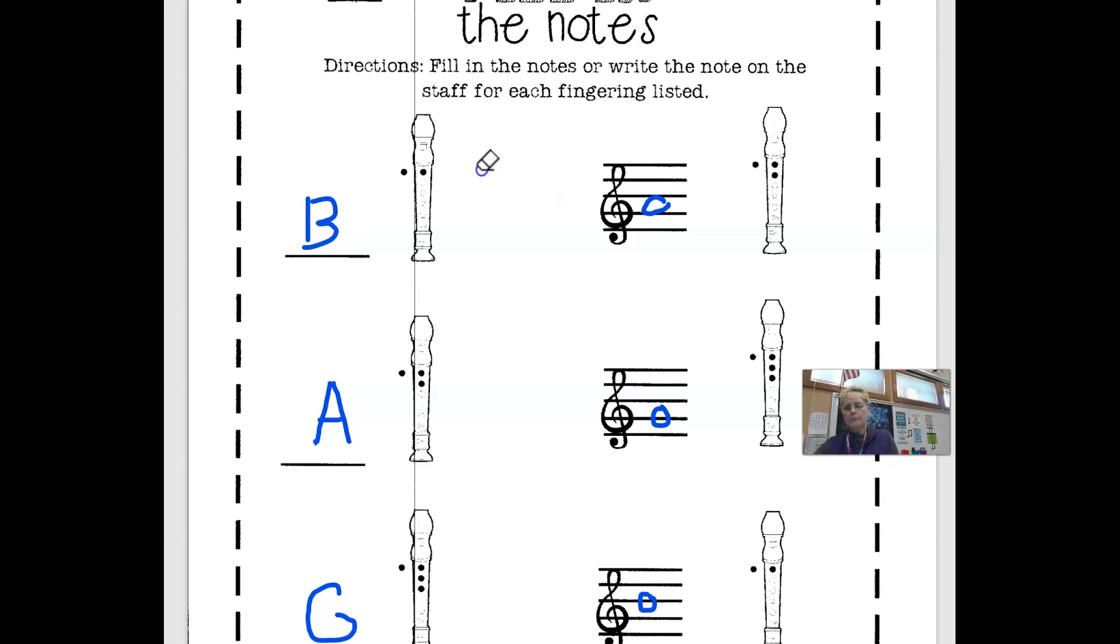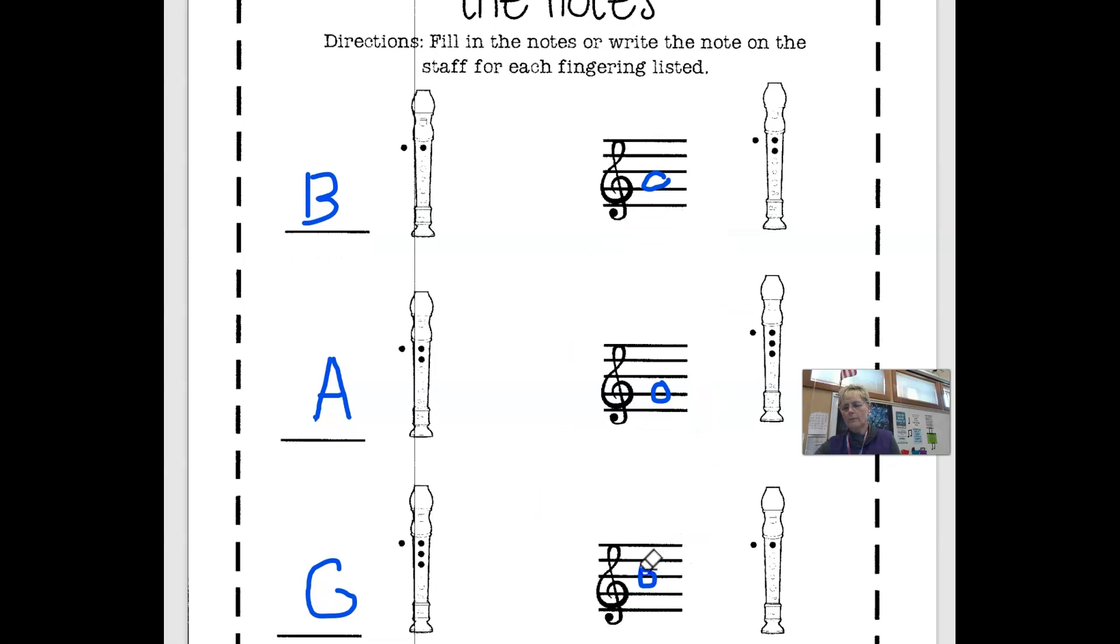So here you have B, remember, is the first finger. A is the first and second finger. G is the first, second, and third. And then a B, remember, looks like the middle. A is the second space, G is the second line.